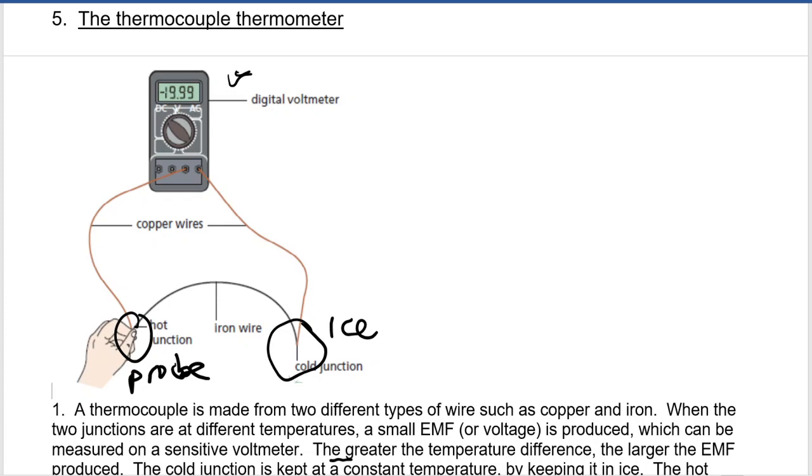Also, it has a large temperature range from about minus 200 degrees Celsius to 1,500 degrees Celsius. So it can measure very high temperatures and very low temperatures. It can also measure temperature at a point.